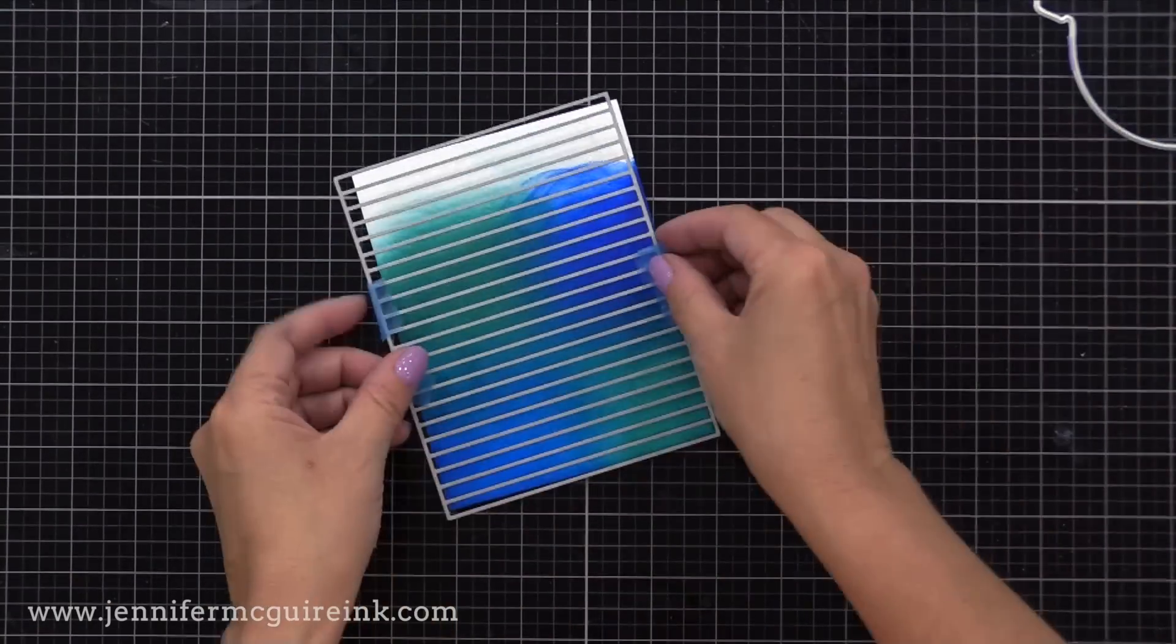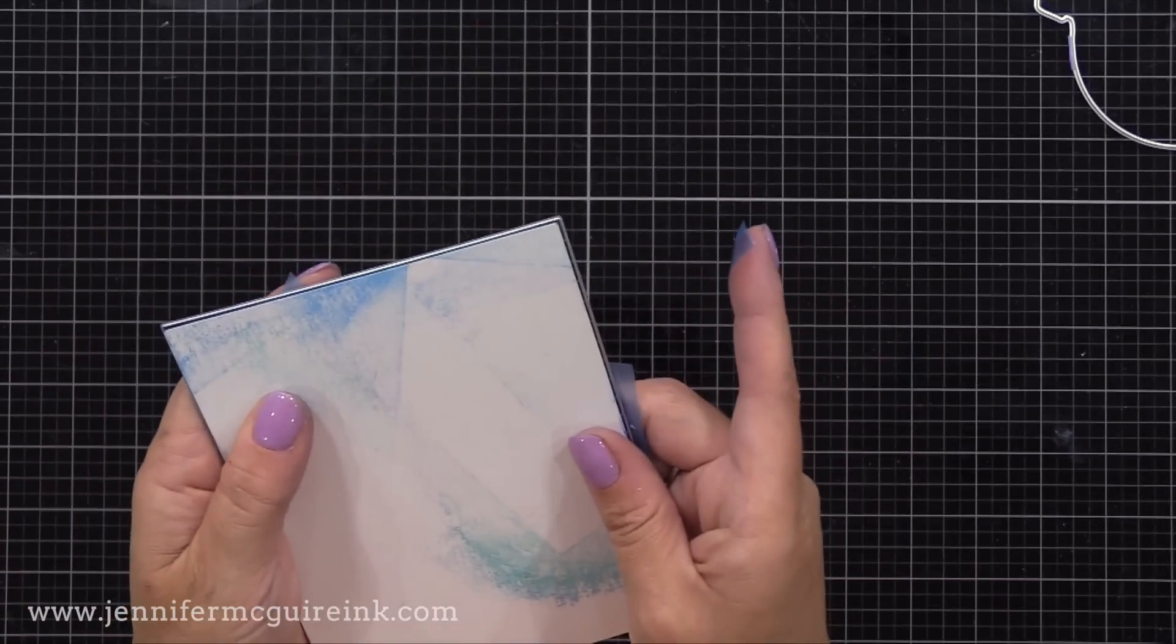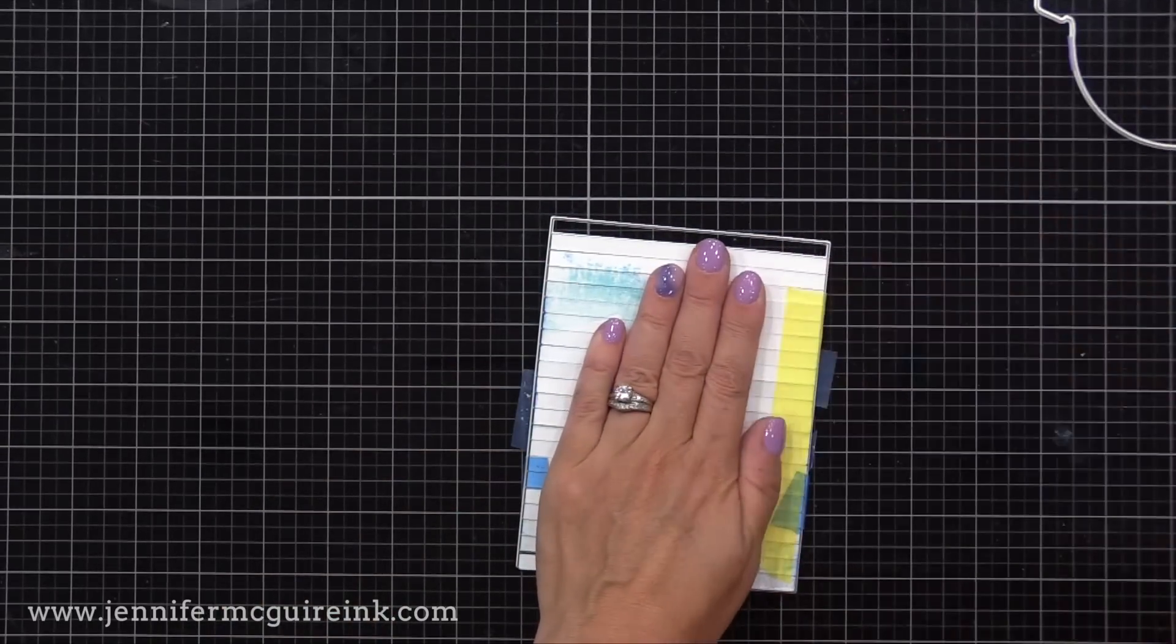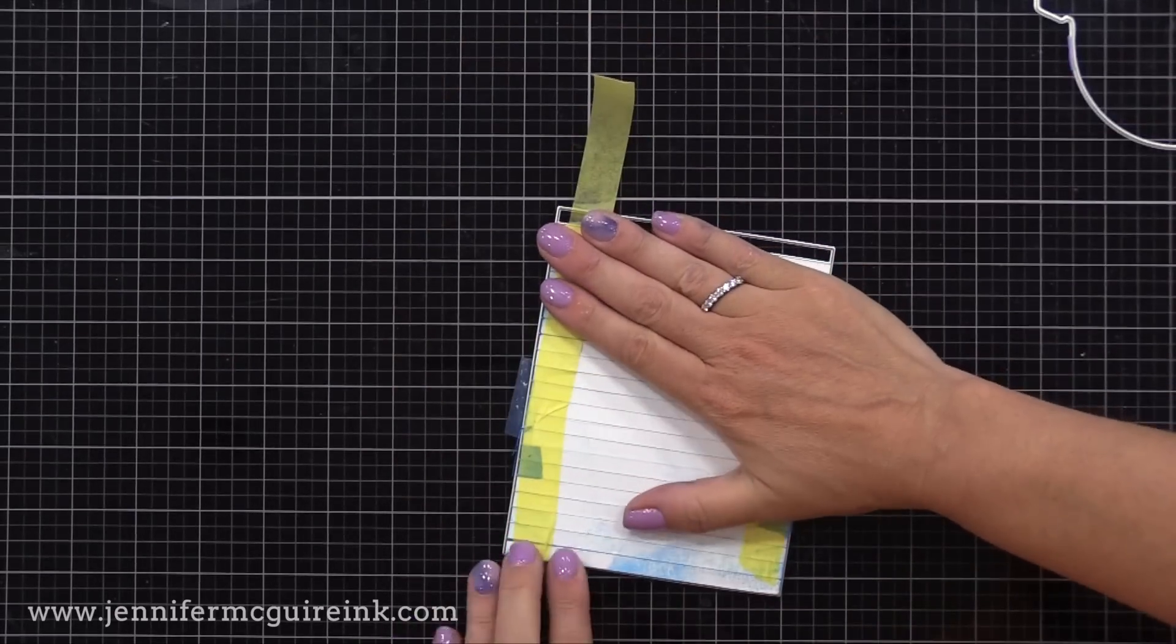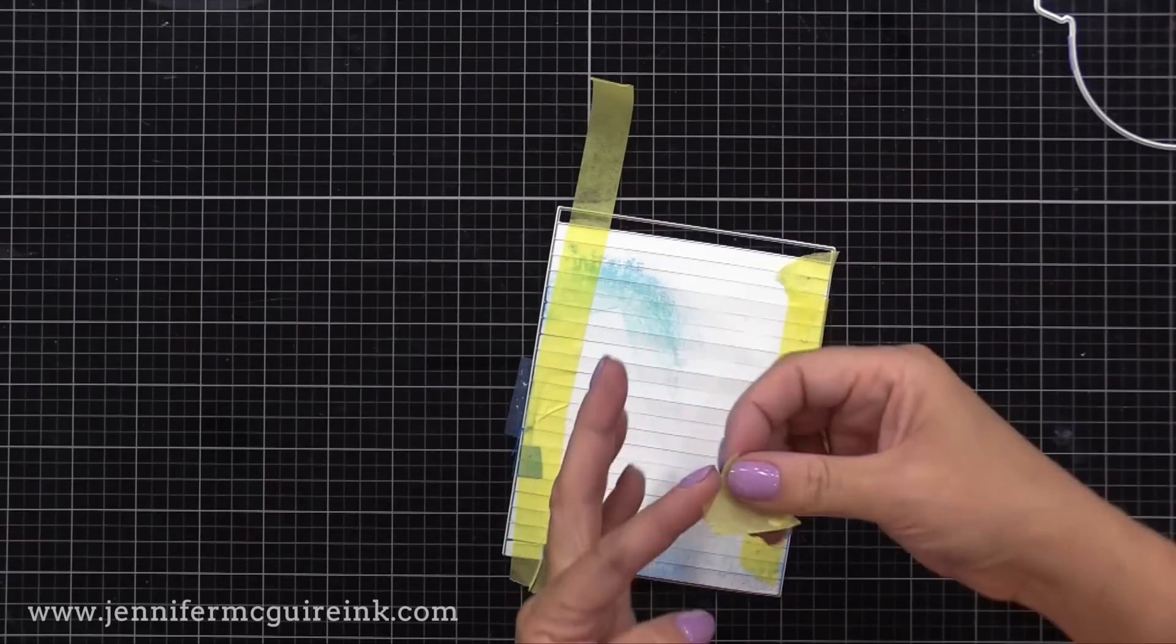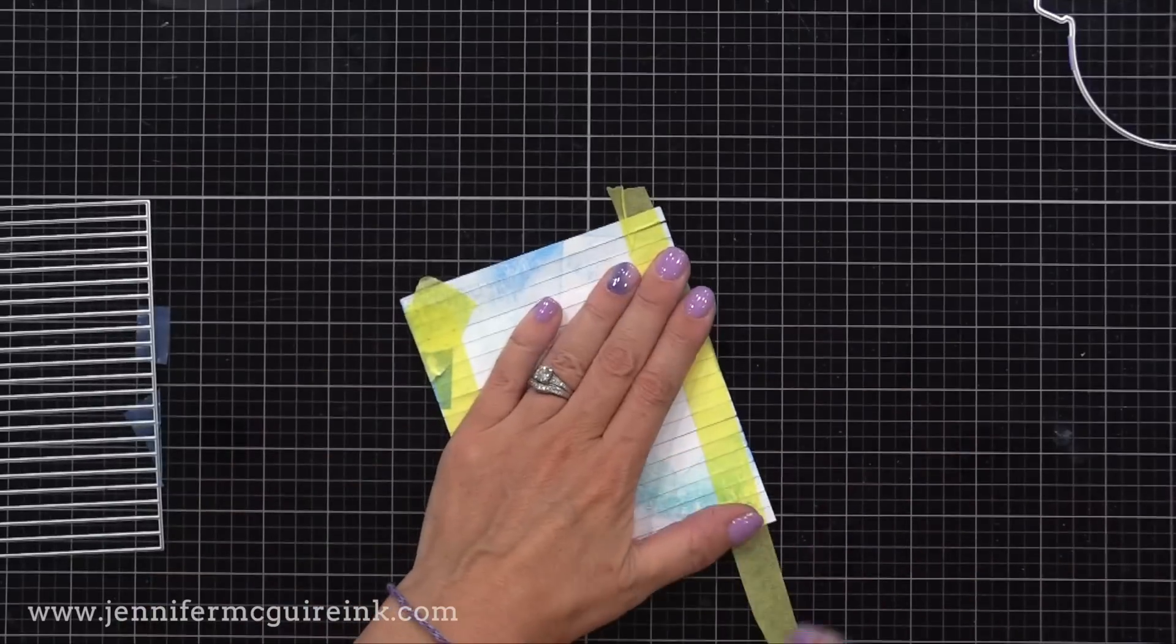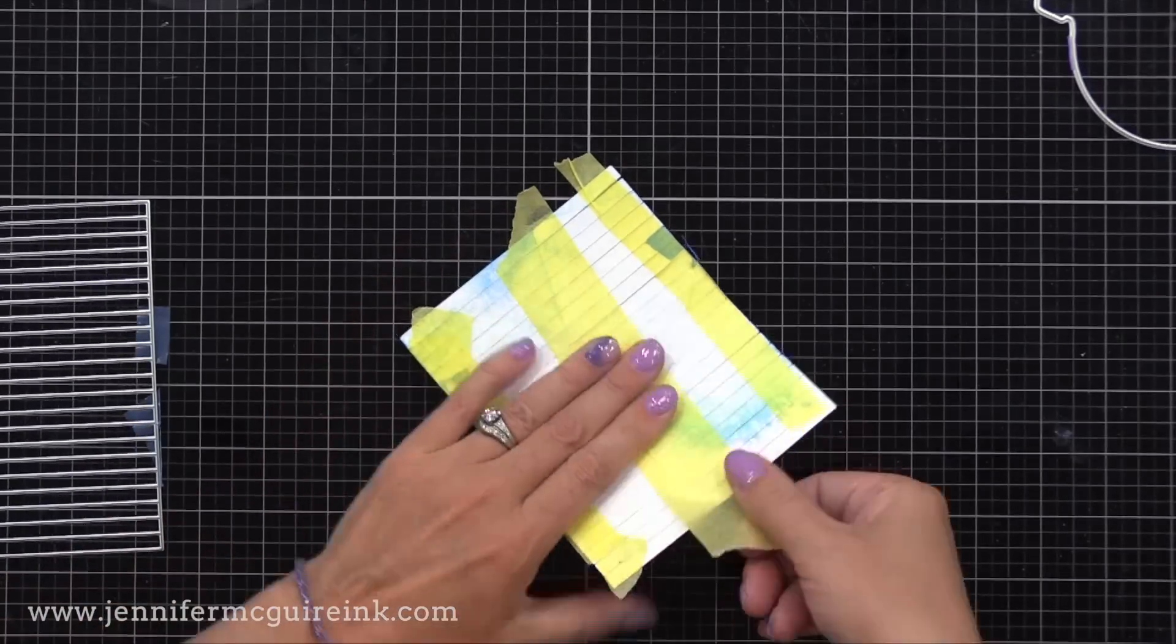Now we'll take that same background die and line it up on the front of our inked piece and run it through our die cut machine. I ran this through my die cut machine and this time I flipped my plates over so that the card stock was facing up and carefully slid it out and all the card stock pieces stayed in place. This time I'm just putting tape directly onto the back of the strips just so they can all be connected.